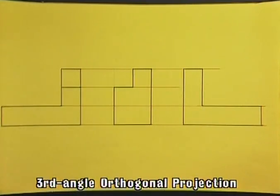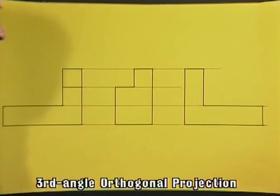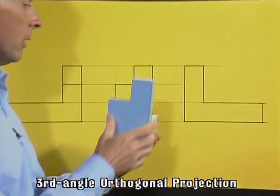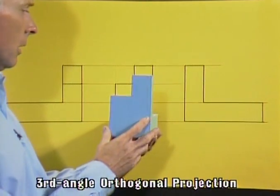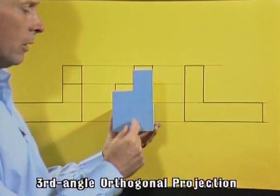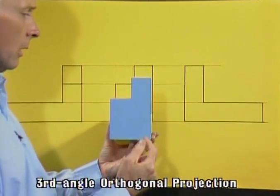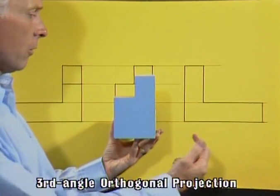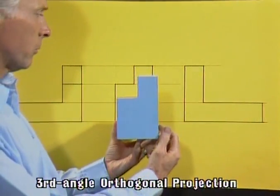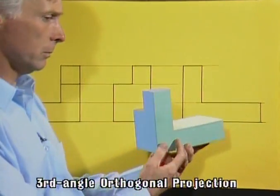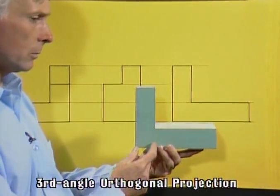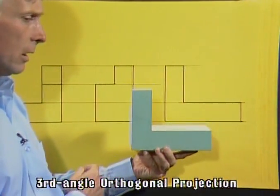Very infrequently, we may need to show the rear view of the model. So that is taken, in this particular case, from rotating from the right view. It just looks like an L shape.